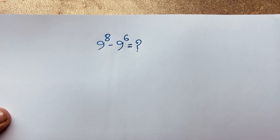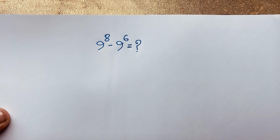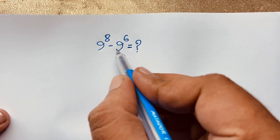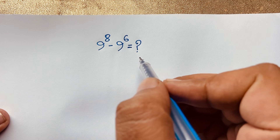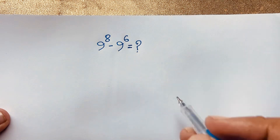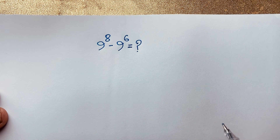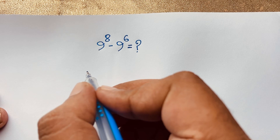Hello everyone, welcome to Rasha's classroom. Today we have solved a nice German Math Olympiad question: 9 to the power 8 minus 9 to the power 6 is equal to what? How to solve this question without a calculator? It is a nice Math Olympiad question.